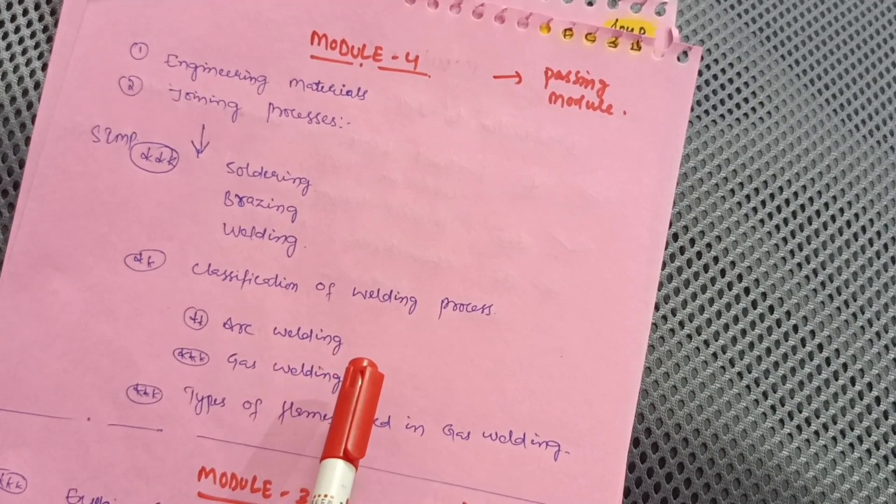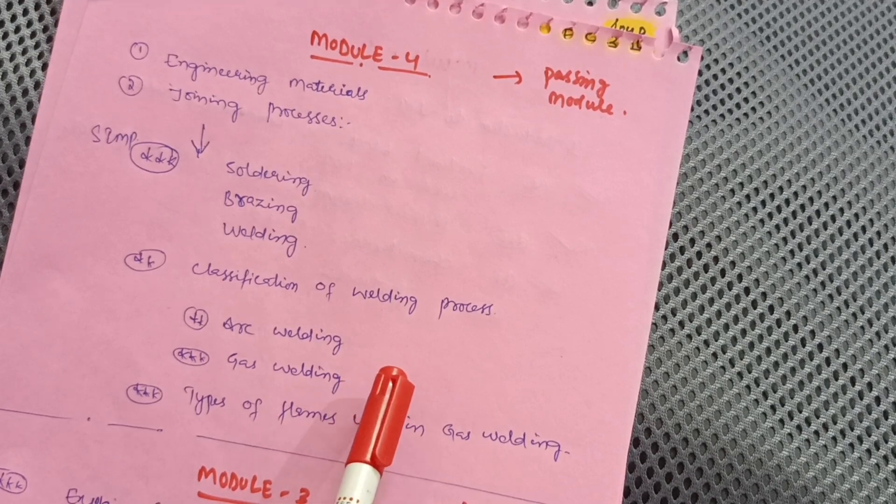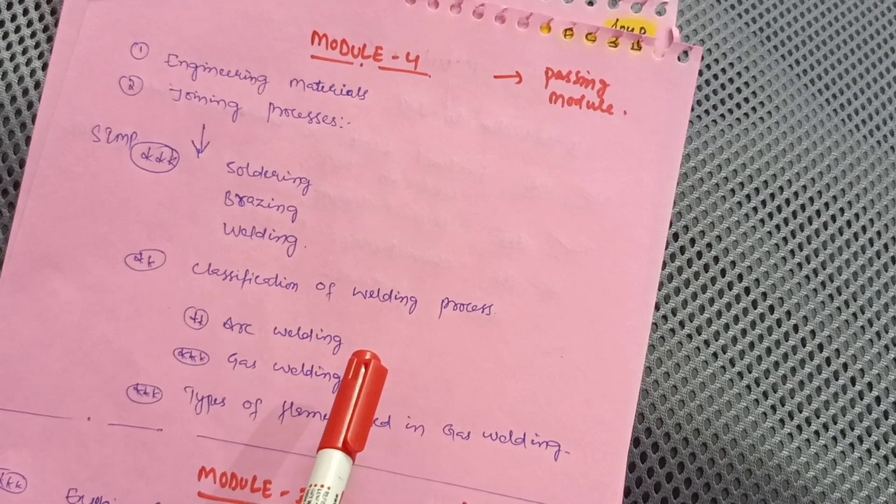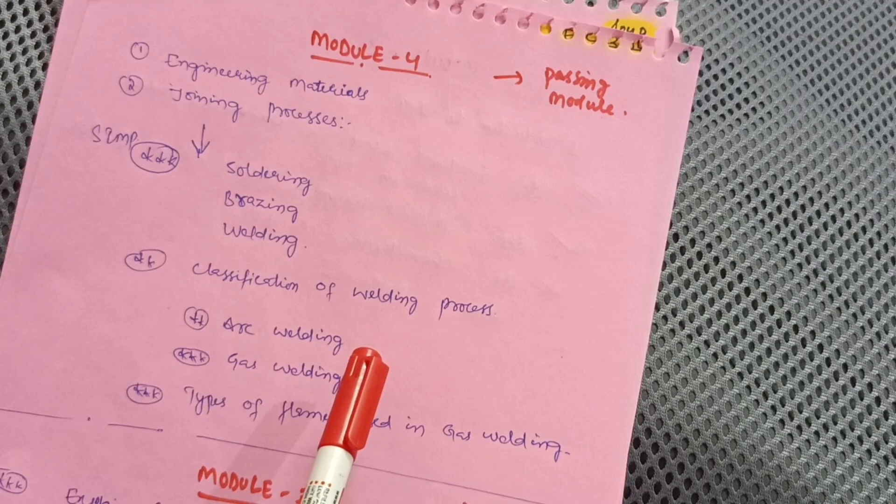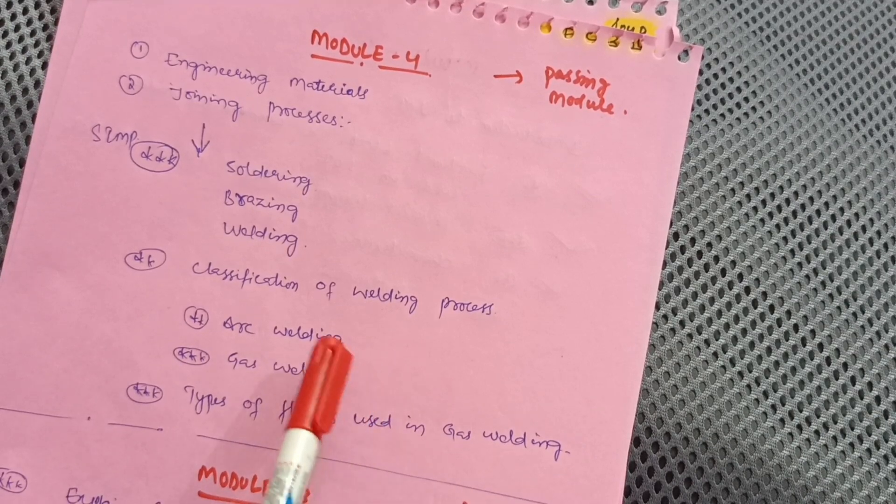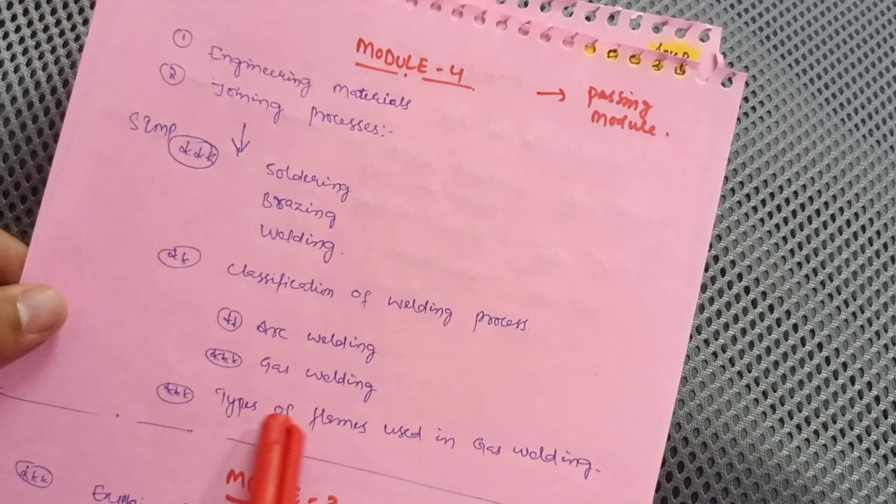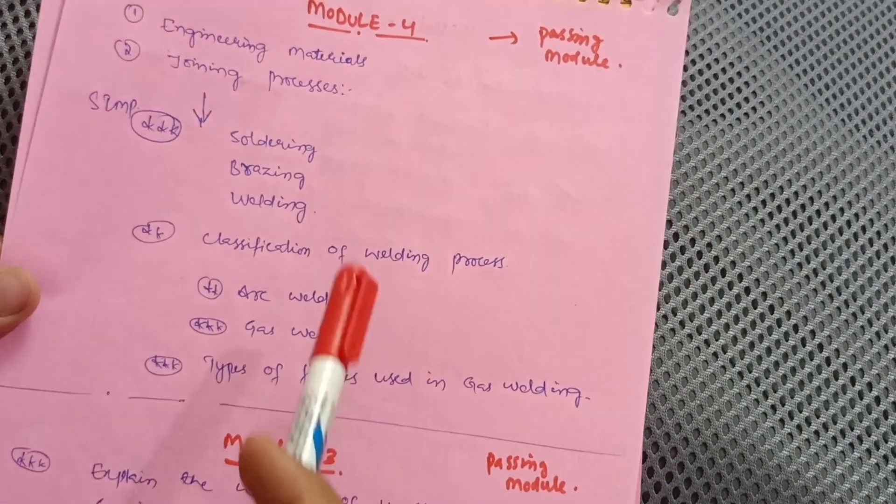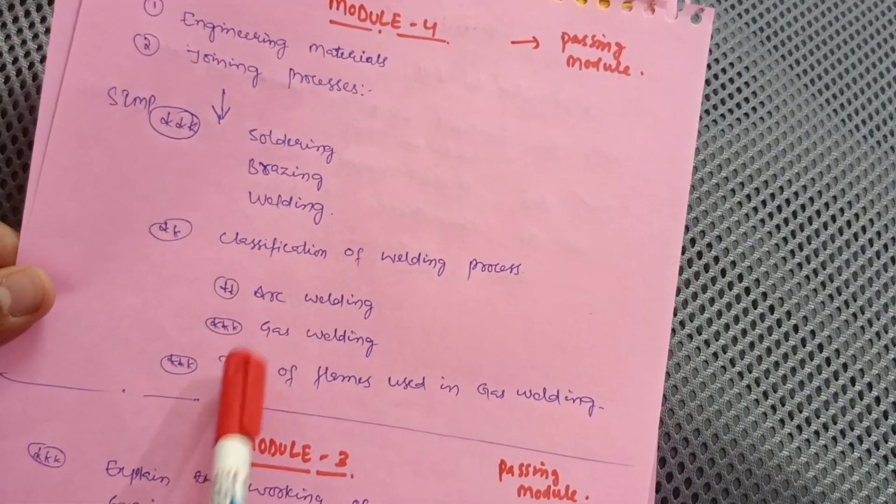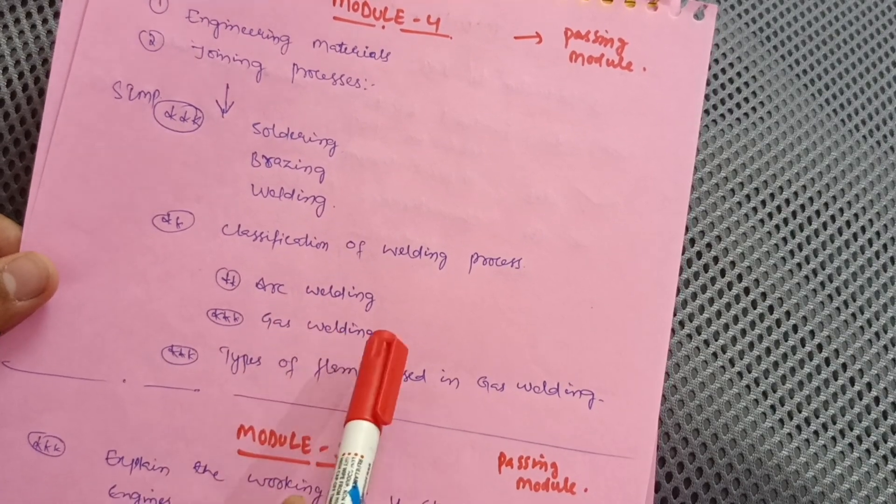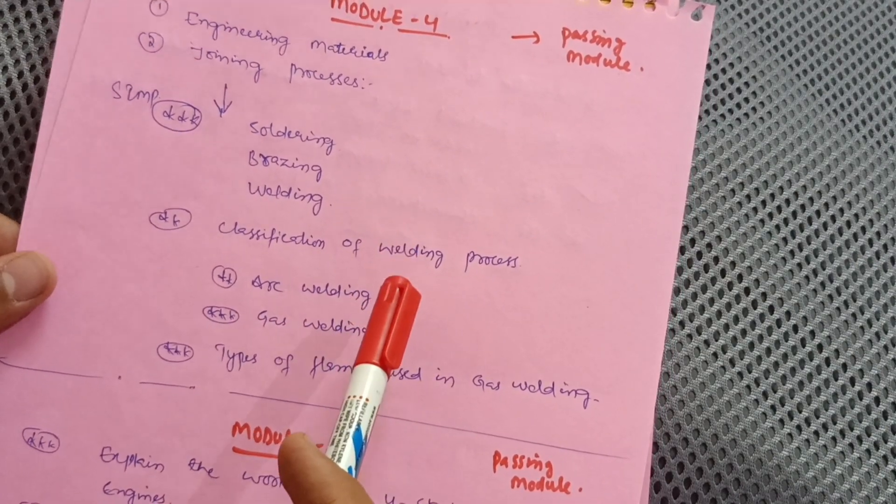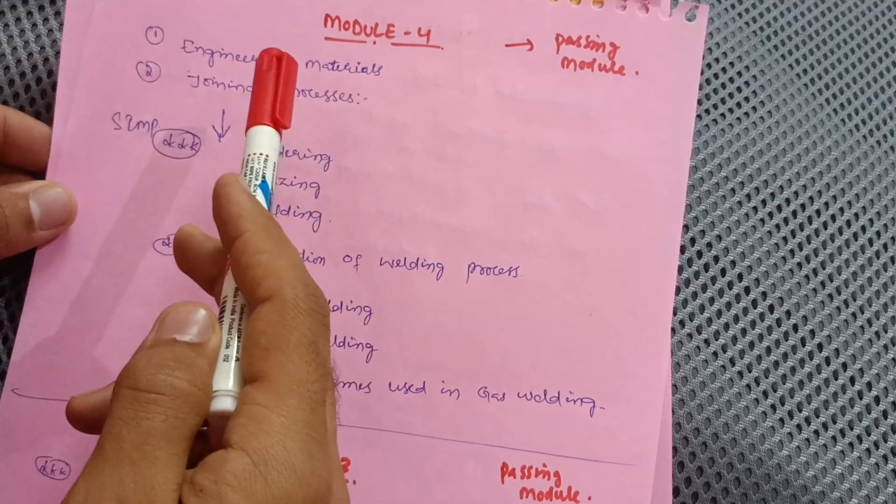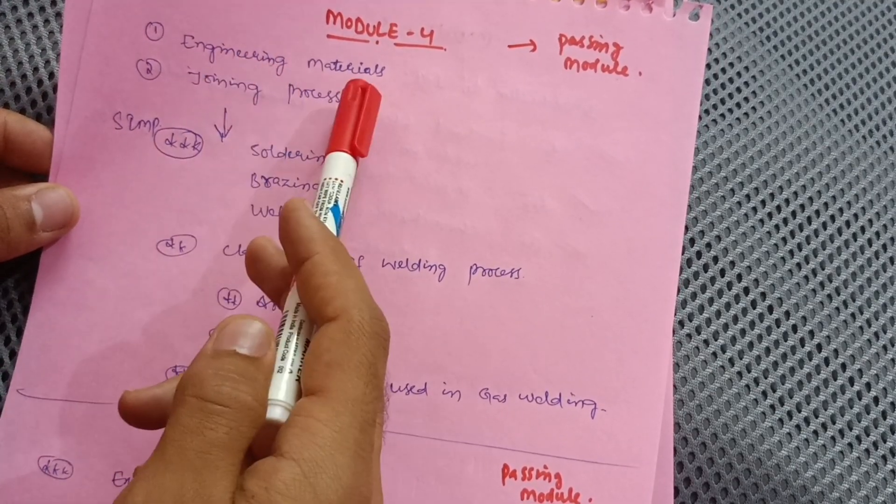As it is a diagrammatic subject, focus on diagrams more than the theory part. With neat sketches, you can write the theory part in your own language. Then types of flames used in gas welding. Only these three topics are enough to conquer this module for 20 marks by leaving the engineering materials chapter.